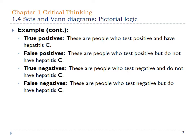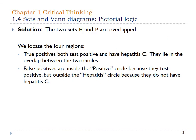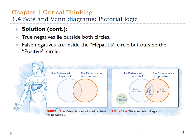We have to look at that and break it down, and that's what this diagram is about. So we have four different possible cases: true positives who test positive and have the disease; false positives who test positive but do not have hepatitis C; true negatives who test negative and don't have it; and false negatives who test negative but do have it. Because of that, the two sets do overlap, and that's how our Venn diagram would be set up.